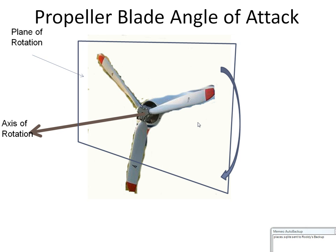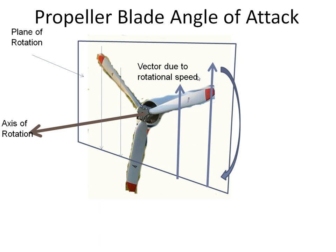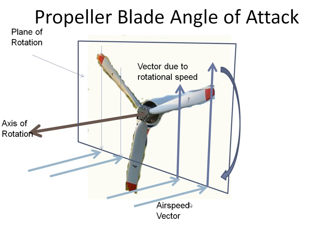As the propeller blades rotate in this clockwise direction, in the plane of rotation, as the blades move down there will be a relative airflow over the blades. The aircraft would also have some forward velocity, so as the aircraft moves forward there will be a relative airflow towards the prop. The air that the propeller sees will be a combination of both this vertical component and this horizontal component — and that is the relative airflow.